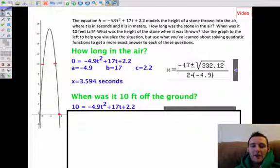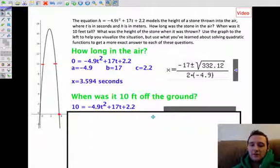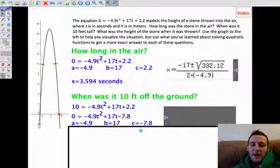When is it 10 feet off the ground? I'm going to plug in a 10 for H because I'm interested in a height of 10 meters. These two points are where the height is 10 meters. So I'm going to set 10 instead of H. 10 equals negative 4.9 T squared plus 17 T plus 2.2. I have to put it in general form though, so I have to set this equal to 0, meaning I have to subtract a 10 from both sides. So this is my new equation. Obviously my A and B are the same, but C has changed.